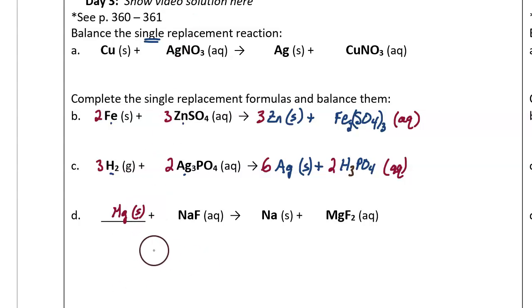Now let's balance this by doing coefficients. There's 1 Mg here. There's 1 Mg here. That looks good. There's 1 Na. There's 1 Na. That looks good. There's 1 F. Uh-oh. But here there's 2 F's. So we need to put a 2 here. But that makes 2 Na's, so we need to put a 2 here. Now it's all balanced.